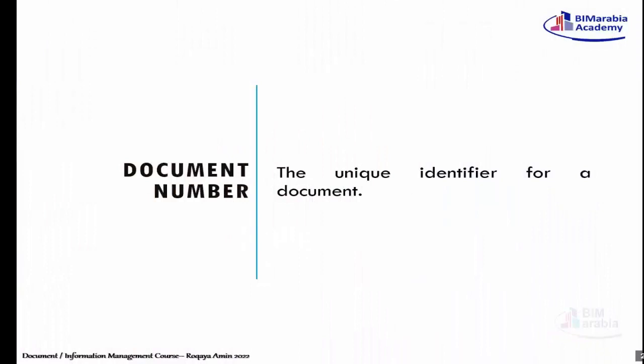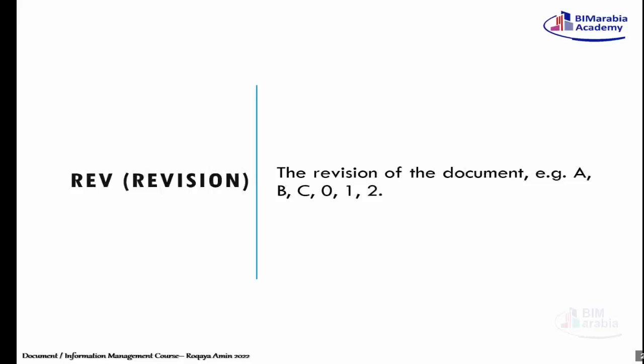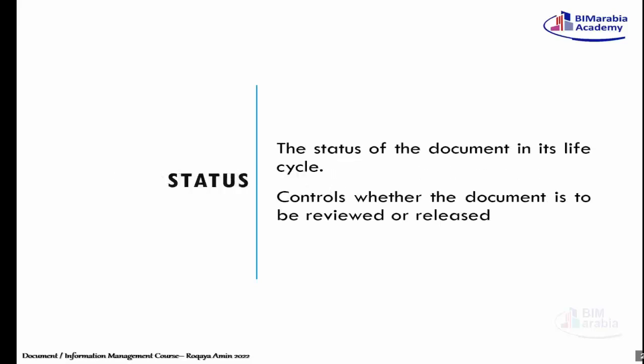نيجي بقى لشوية Definitions. اول حاجة الـ Document Number - ده الـ Unique Identifier للـ Document، الحاجة اللي بتعرفنا ايه هو رقم الوثيقة. تاني حاجة الـ Revision - ده رقم الاصدار بتاع الـ Document بتاعتنا سواء كان A او B او C او 1 و2 و3. بعد كده الـ Status - دي حالة المستند.